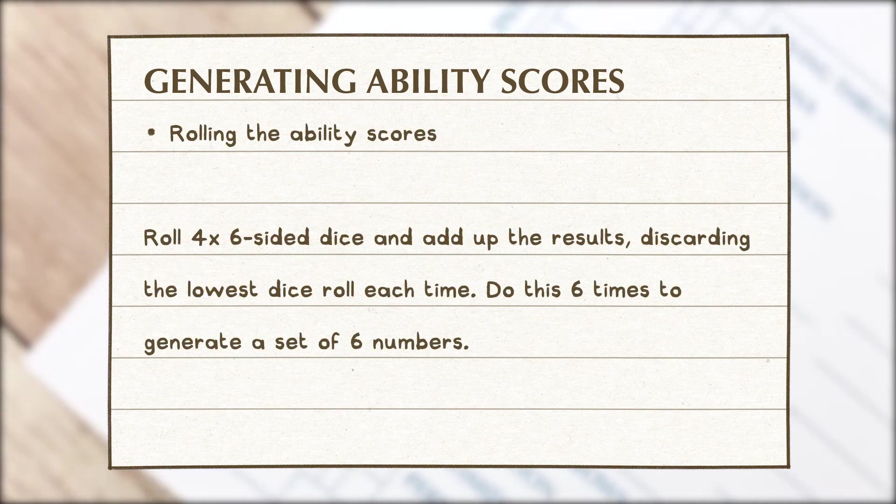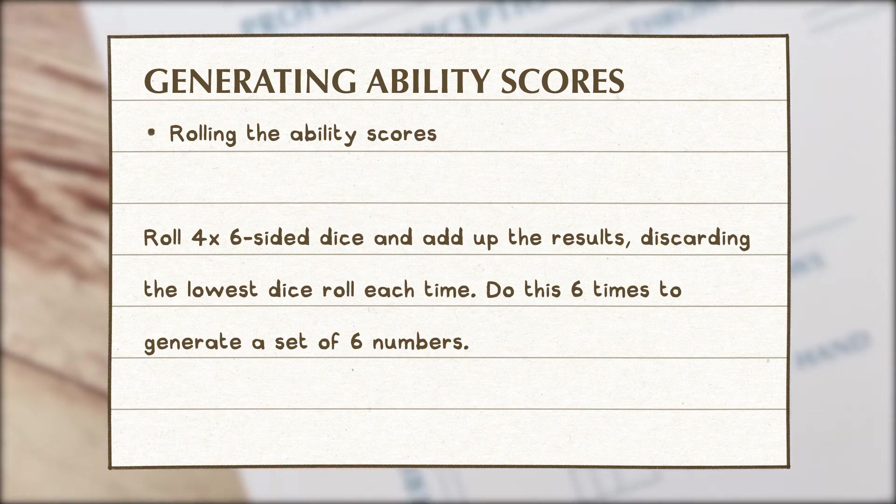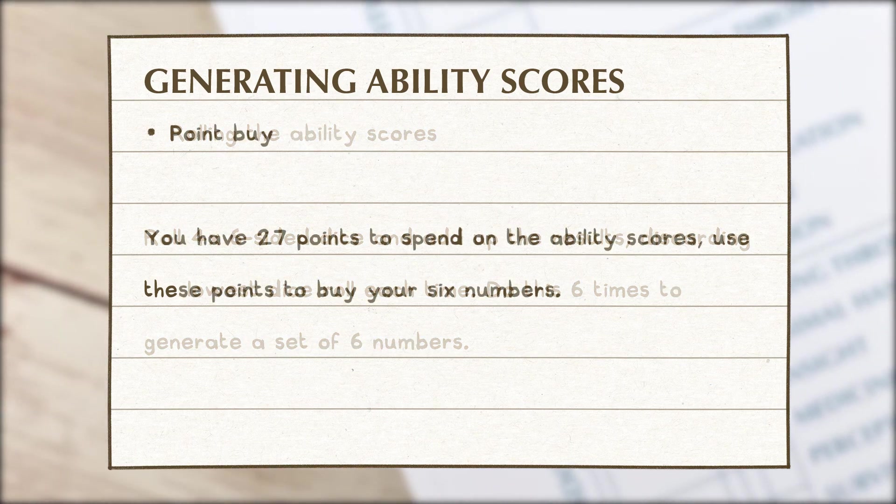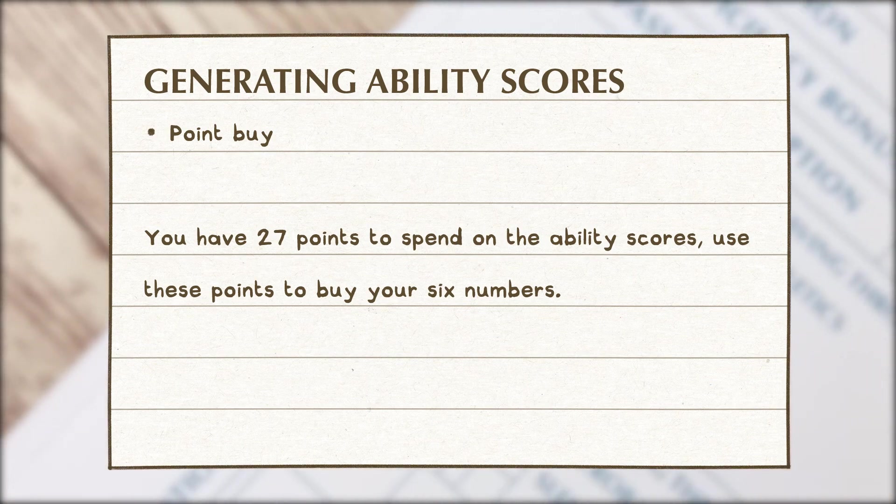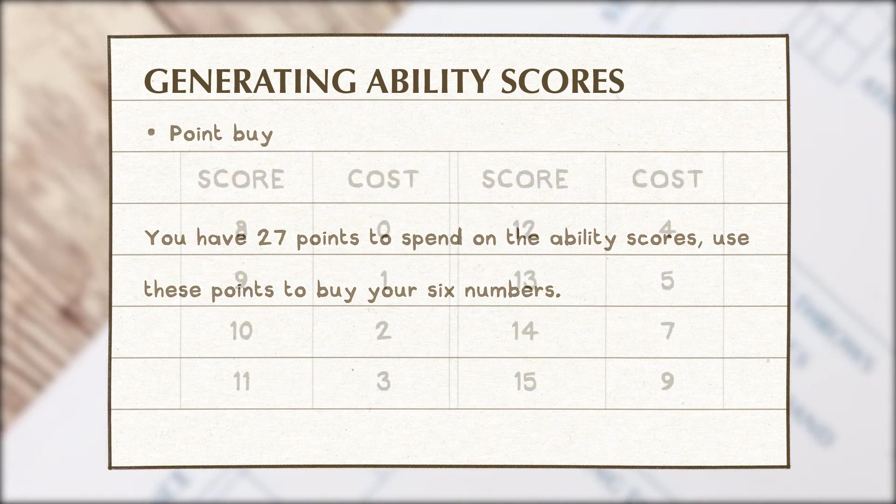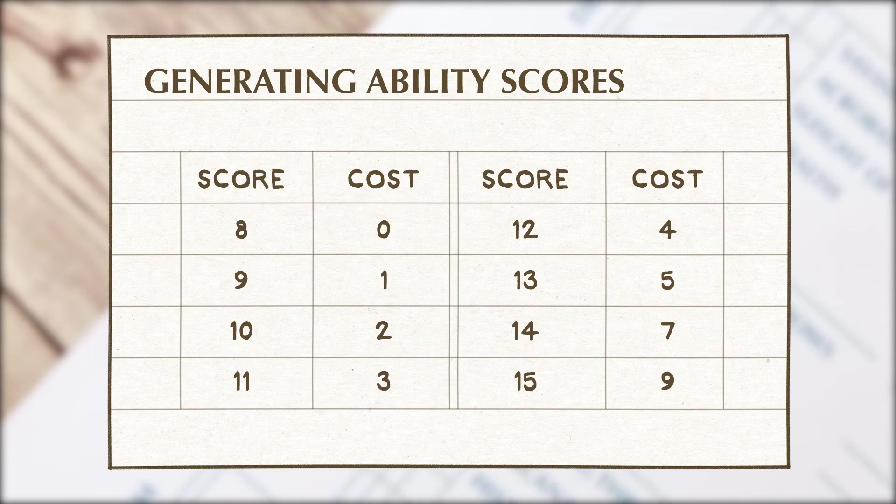You can roll your numbers. You roll four six-sided dice and add up the results discarding the lowest number each time. You do this six times to get your set of six numbers. Finally point buy. You have 27 points to spend on your ability scores and you use these points to buy your six numbers. This table shows how much each score costs to buy.